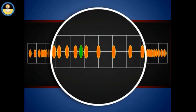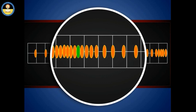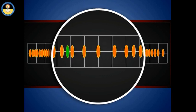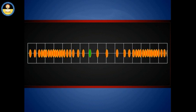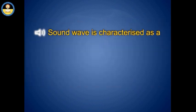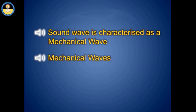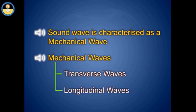Since a sound wave is a disturbance which is transported through a medium via the mechanism of particle-to-particle interaction, a sound wave is characterized as a mechanical wave. There are two types of mechanical waves: transverse waves and longitudinal waves. Both of these wave types are traveling disturbances, but they are different because of the way that they travel.